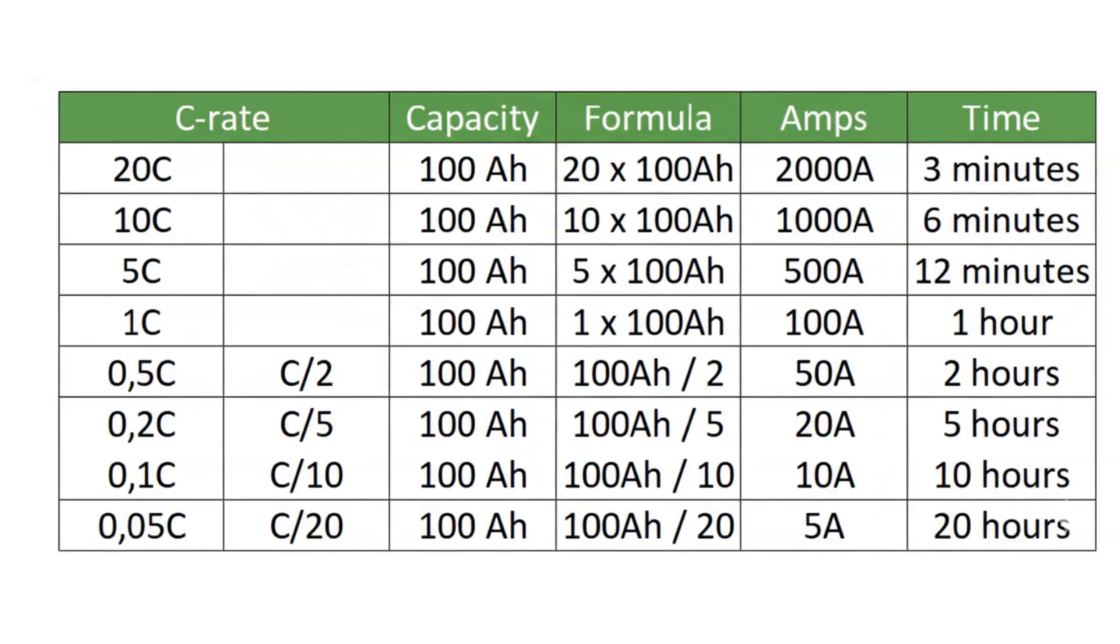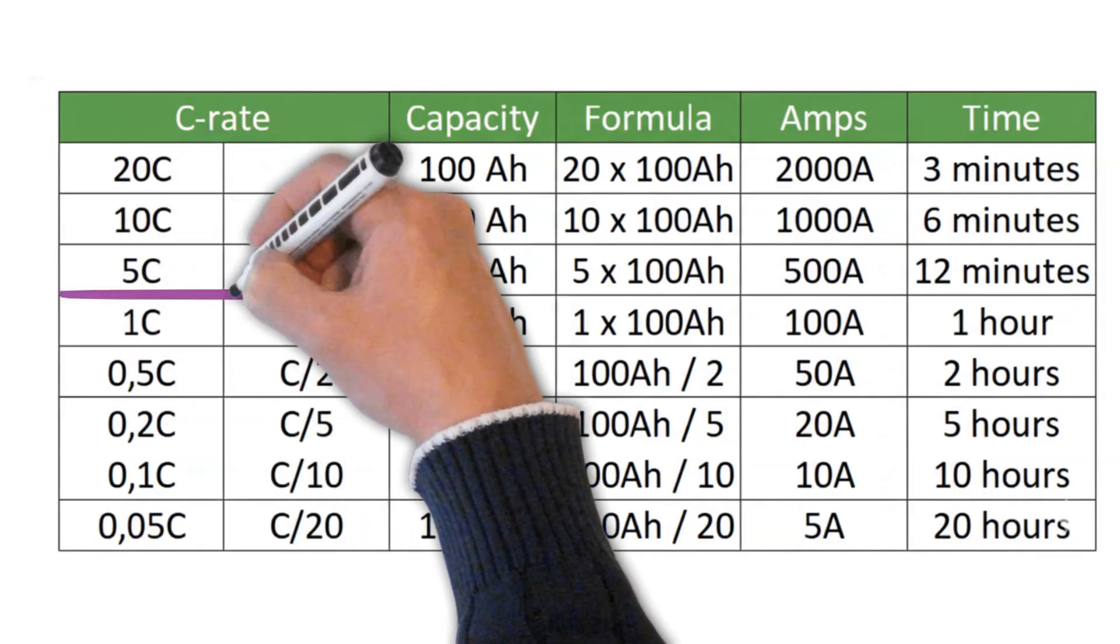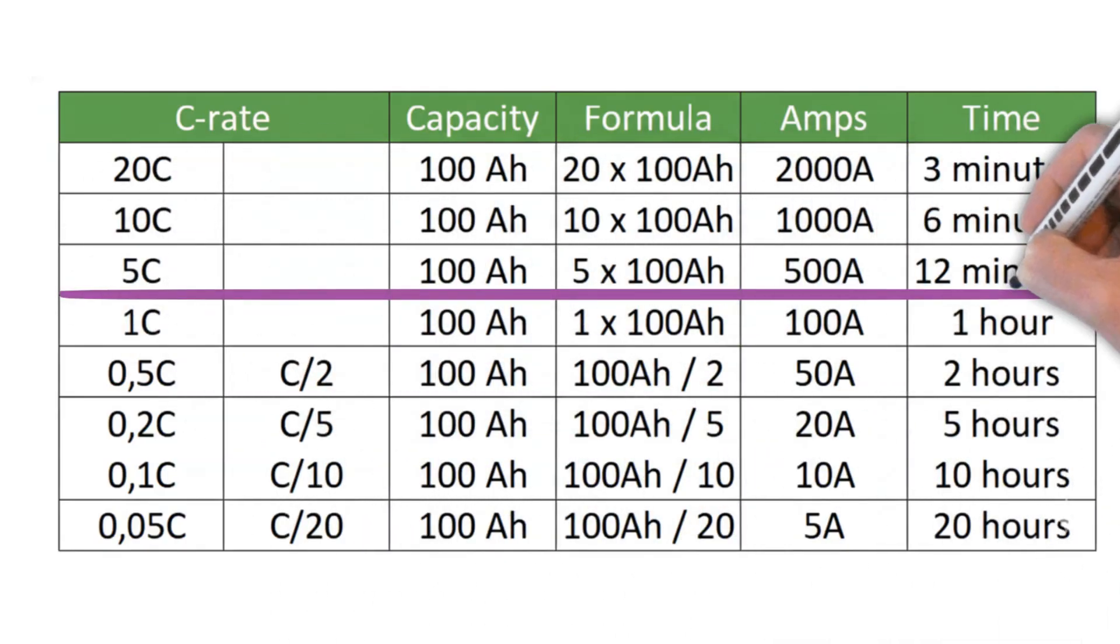If we take 5C as an example, you multiply the ampere-hour rating by 5. So a battery with 100 ampere-hours would theoretically be able to handle 500 amps, but only for a very short time, around 12 minutes, before the battery reaches 0% state of charge. This type of high C-rate is not realistic for solar systems. Such extreme discharge rates are usually found in batteries used for things like drones or lithium titanate cells.